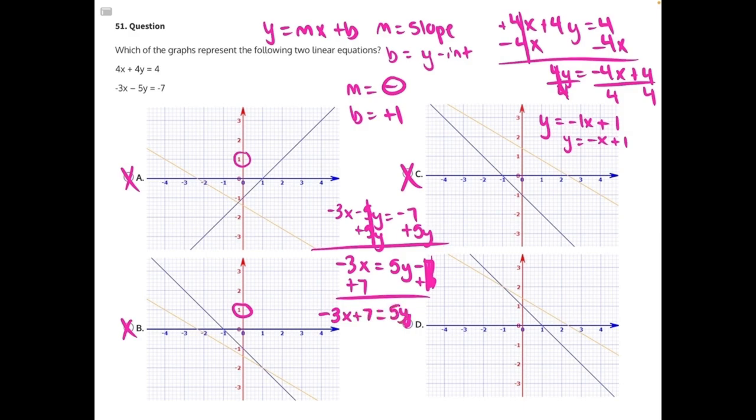And the last step, 5 is being multiplied to y, so we need to divide everything by 5. And that will give us negative 3 over 5x plus 7 over 5, and that is all equal to y.